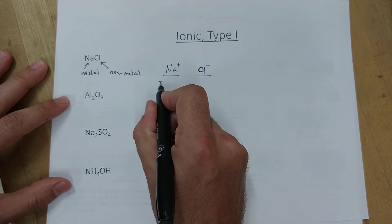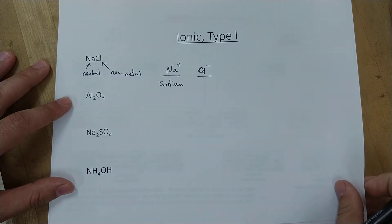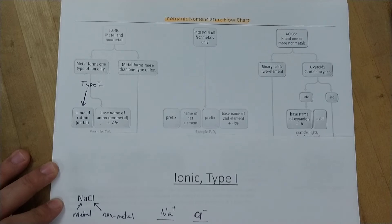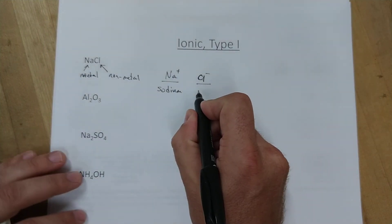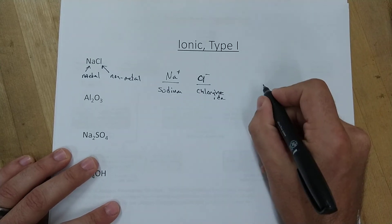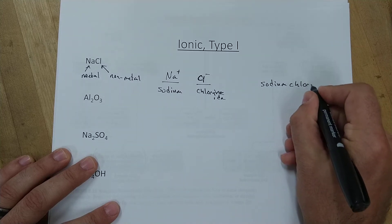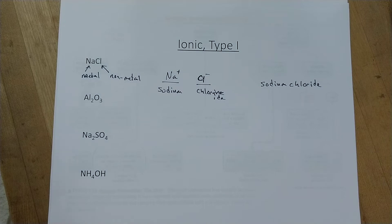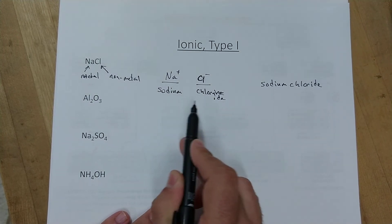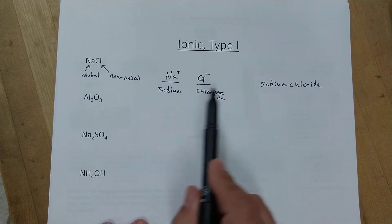The flowchart tells us to name the metal cation first, then change the name of the non-metal anion to end in -ide. Chlorine becomes chloride, so the name is sodium chloride. I call this 'cat-dog naming' — like the old cartoon where a cat and dog were stuck together. You just slap the cation name and the anion name together, nothing else required.